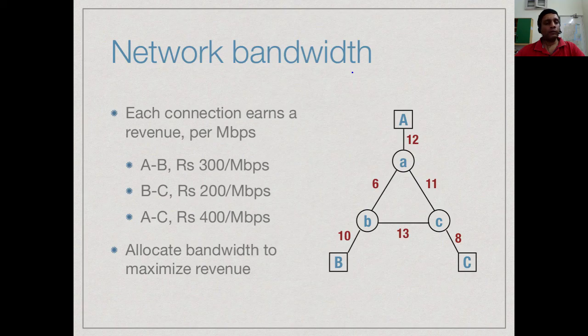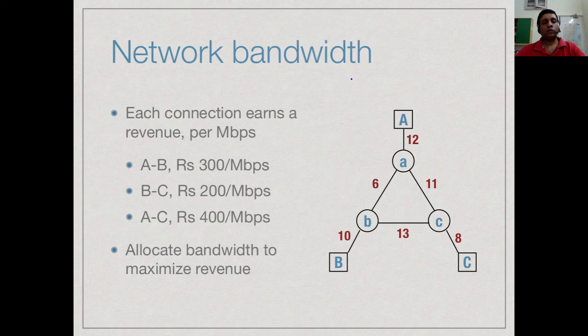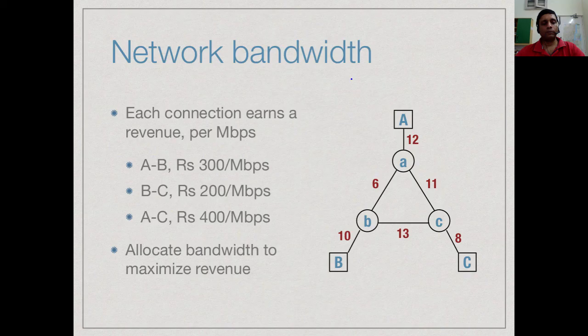Now we have to allocate a minimum of 2 megabits but the customers are willing to take as much as we can give them subject to that minimum and we get a certain amount of revenue depending on how we utilize the capacity. Our goal is to allocate bandwidth to maximize the revenue given that the customers are willing to take anything above 2 Mbps.